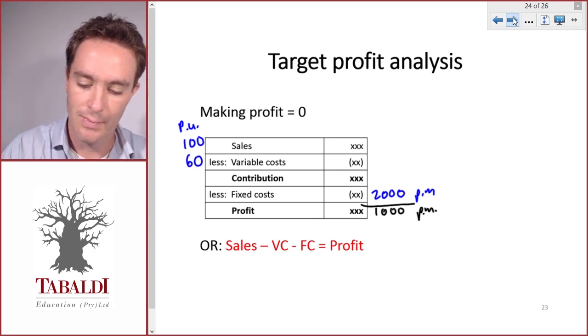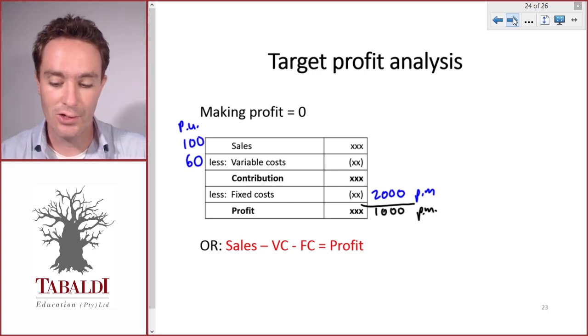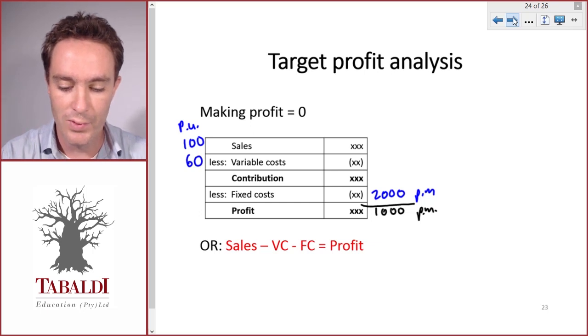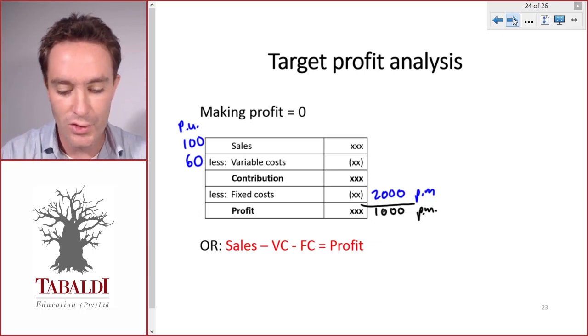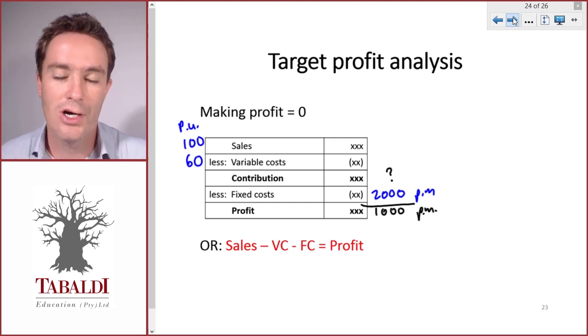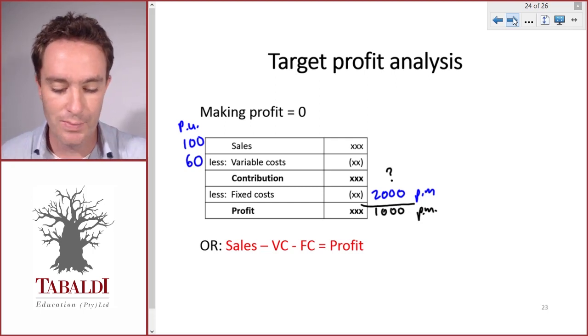So now how do we calculate the number of units required to make $1,000 profit? We want to know how many units do we need to sell, or what should our contribution be in order to make $1,000 profit.